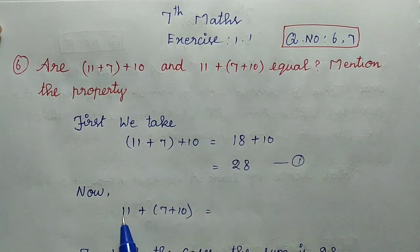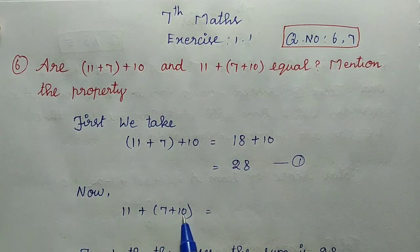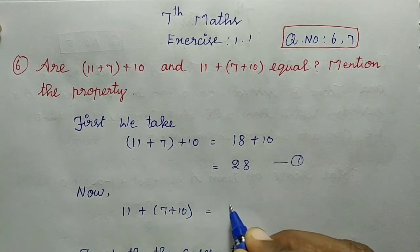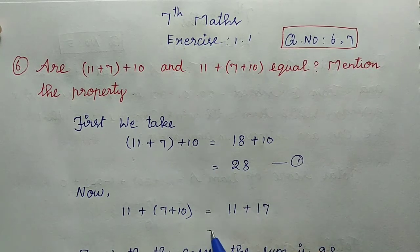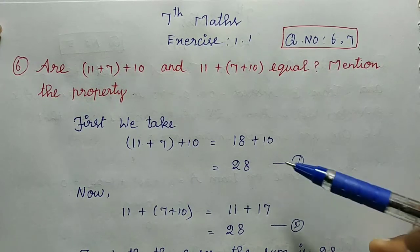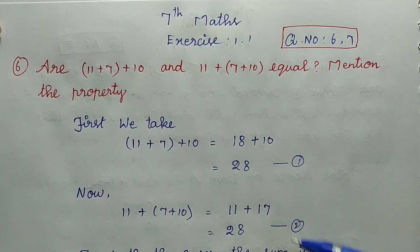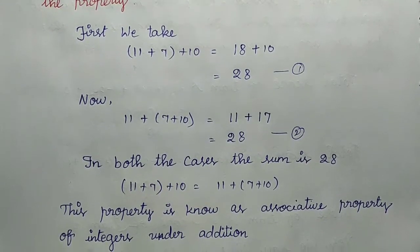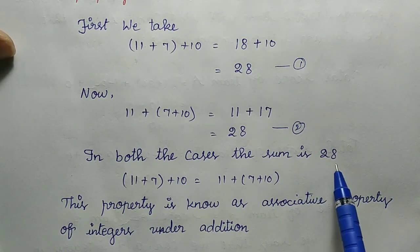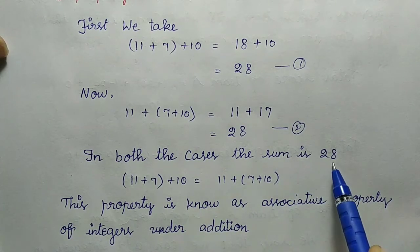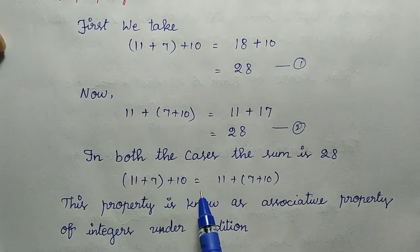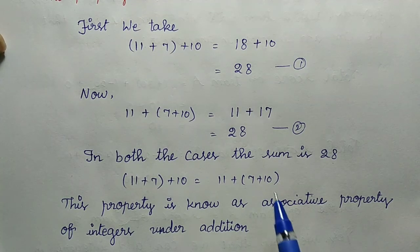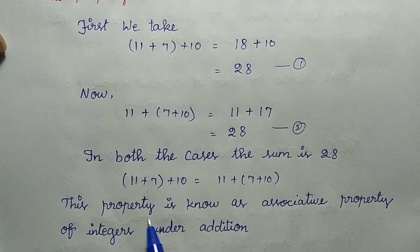We have two sets of integers. Now 11 plus 7 plus 10: here we solve the bracket first. So 11 plus 7 gives 18, and 18 plus 10 gives 28. Then for 11 plus 7 plus 10, we add 7 plus 10 to get 17, then 11 plus 17 equals 28. Now 11 plus 7 plus 10 equals 11 plus 7 plus 10 — this property is known as